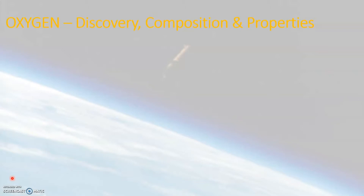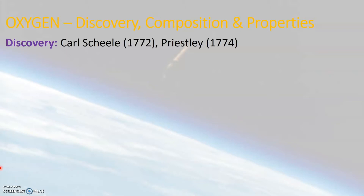In the year 1772, a scientist named Karl Scheele was the first to discover oxygen gas. Later, in the year 1774, another scientist named Joseph Priestley did a few experiments and through his experimental studies also discovered oxygen gas. Joseph Priestley is the first scientist who published his work on the discovery of oxygen gas. Later, in 1789, the scientist Antoine Lavoisier named this gas as oxygen.